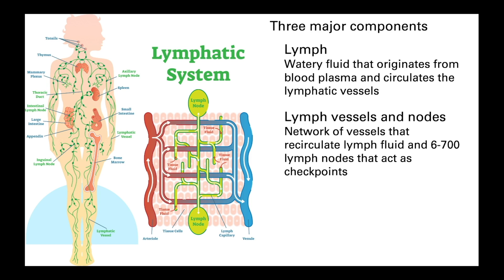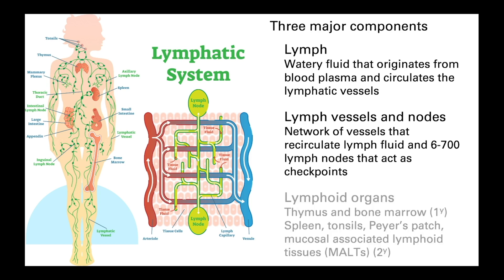Finally, other lymphoid tissues include the primary organs — the red bone marrow and thymus — and the secondary organs, which include the spleen, tonsils, Peyer's patches, and specialized tissue around mucosal membranes called mucosa-associated lymphoid tissues, or MALTs. Some of these tissues house specialized immune cells that help defend us against harmful pathogens, whilst others — particularly the bone marrow, thymus, and spleen — act as sites where immune cells can develop and mature.